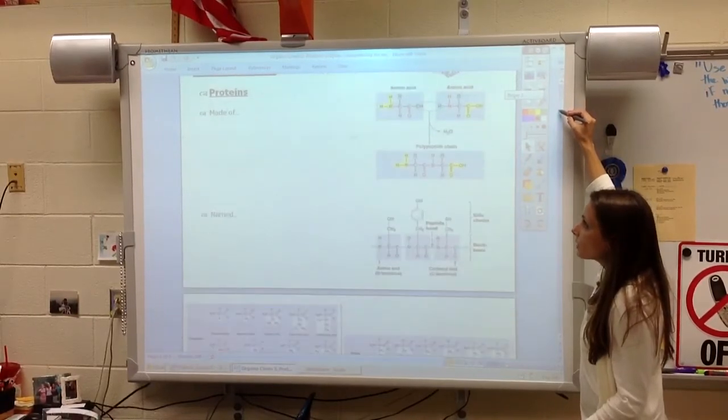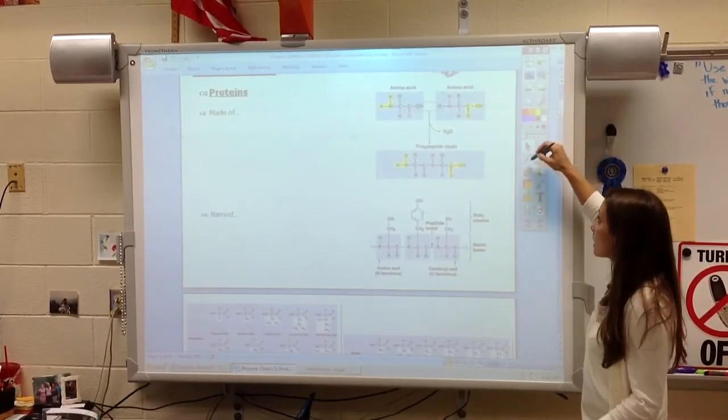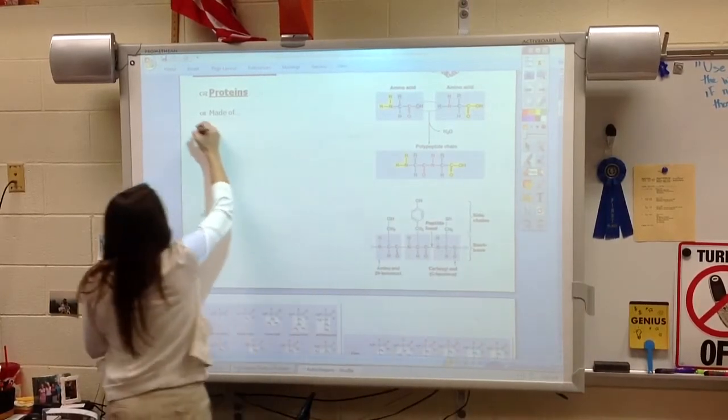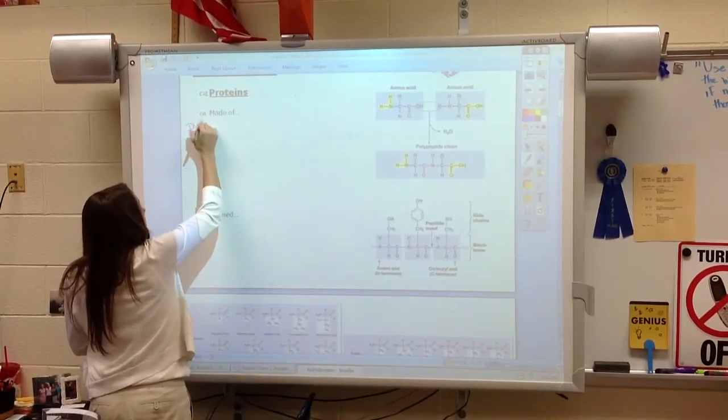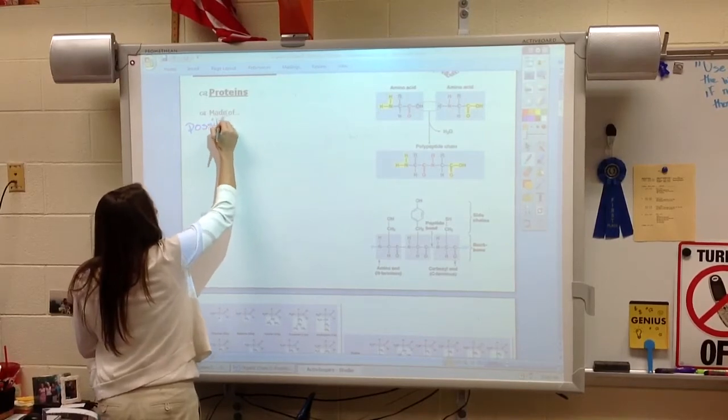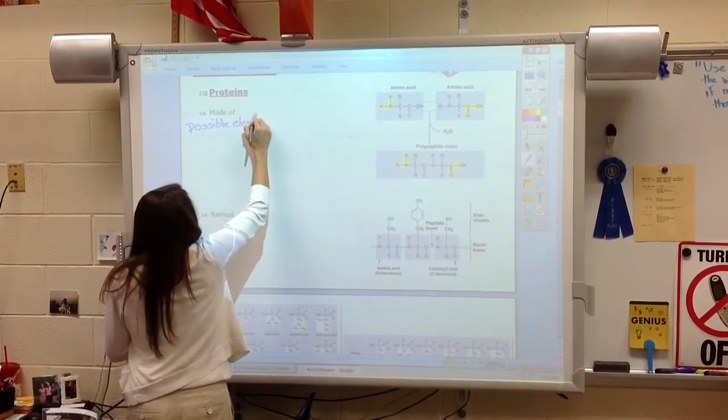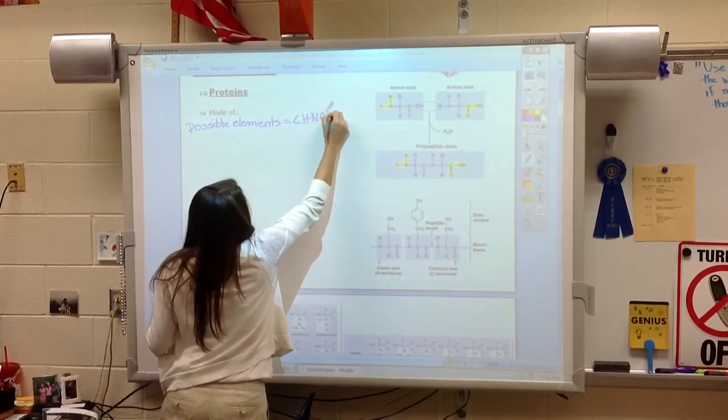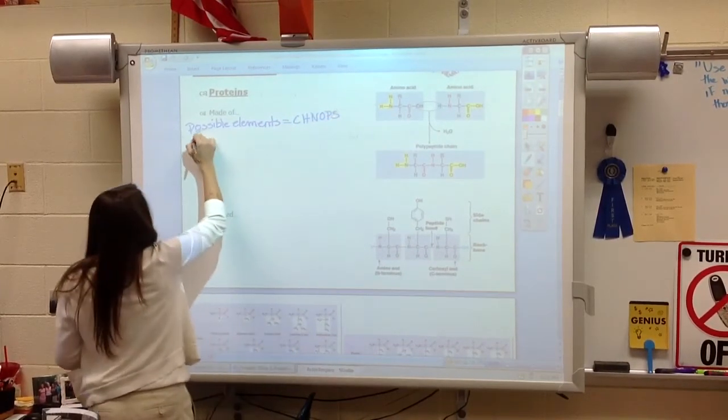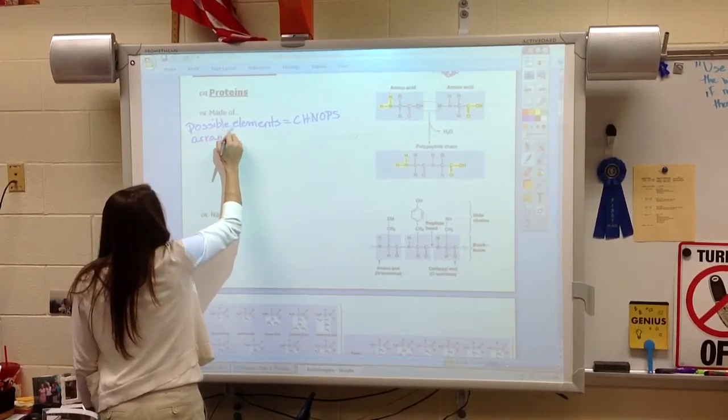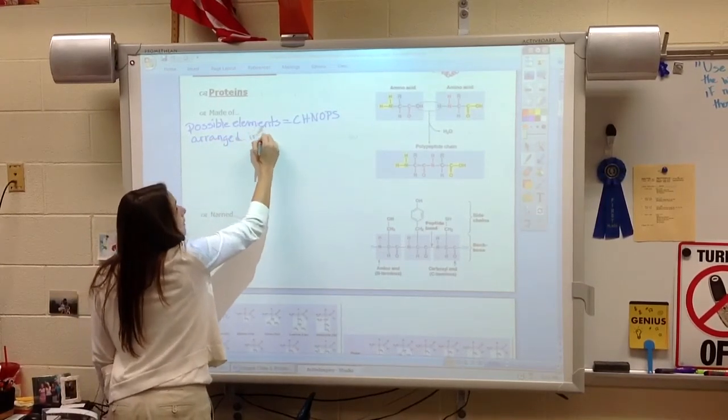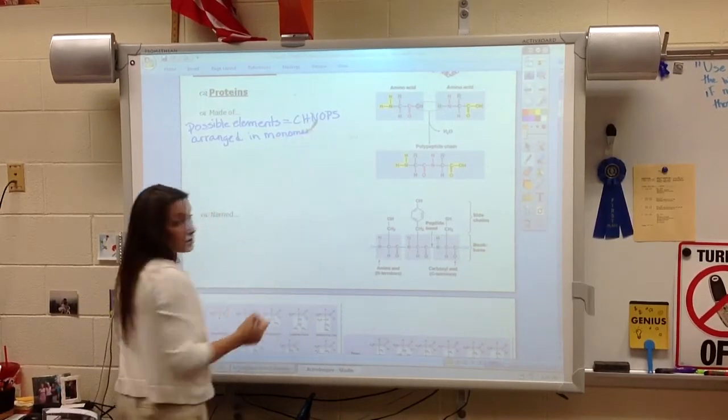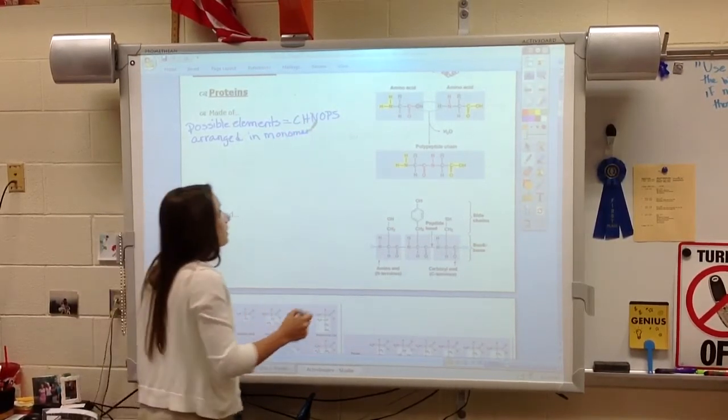First, we want to focus on what is a protein made of. When we talk about the possible elements, they are CHNOPS. These elements are arranged into a monomer. Remember, a monomer is the smallest subunit called an amino acid.